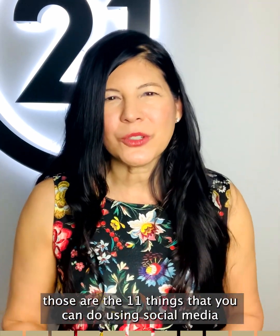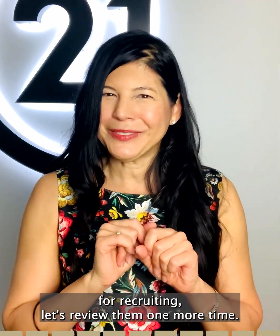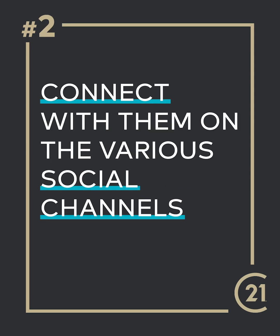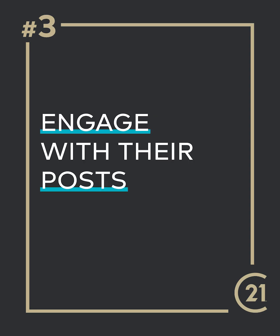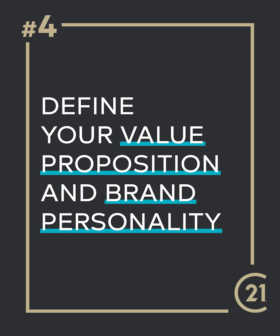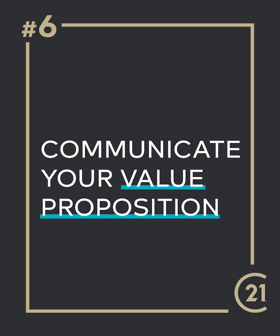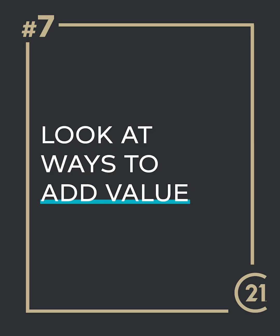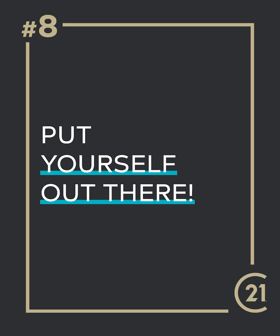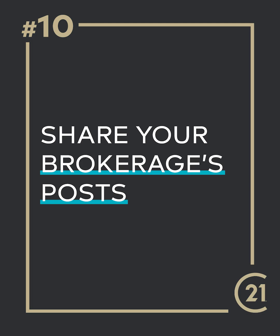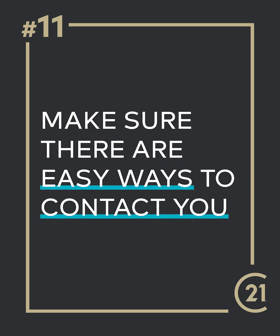Those are the 11 things you can do using social media for recruiting. To review: number one, determine your target list; number two, connect with them on the various social channels; number three, engage with their posts; number four, define your value proposition and brand personality; number five, define your target audience; number six, communicate your value proposition; number seven, look at ways to add value; number eight, put yourself out there; number nine, repurpose internal content for an external audience; number ten, share your brokerage's posts; and number eleven, make sure there are easy ways to contact you.